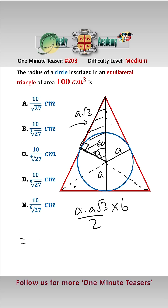is that times 6, which equals 3a²√3. And we know from the question that that equals 100, so all we need to do now is solve this.